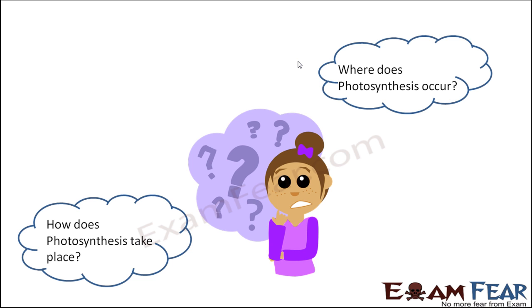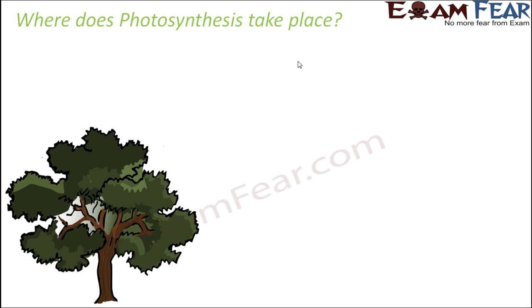Now another question, the most important question is, how does photosynthesis take place? We will try to understand the process of photosynthesis step by step. Before that, we will try to understand where it occurs. For that, we need to understand the detailed structure of a chloroplast. So let us first see where does photosynthesis take place.